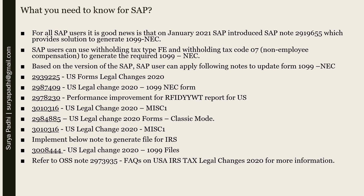Based on the version of SAP, users can apply the following notes to update Form 1099-NEC: 2939225 (U.S. Forms Legal Changes 2020), 2987409 (U.S. Legal Change 2020 to 1099-NEC Form), 2978230 (Performance Improvement for RFIDITE report for US), 3010316 (U.S. Legal Change 2020 Miscellaneous One), and 2984885 (U.S. Legal Change 2020 Forms Classic Mode).